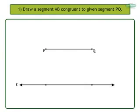Name these two points as A and B. This segment AB is of equal length of segment PQ. Segment AB is congruent to segment PQ.